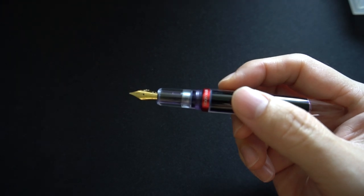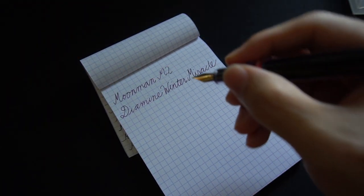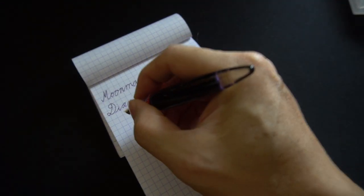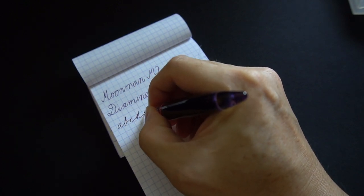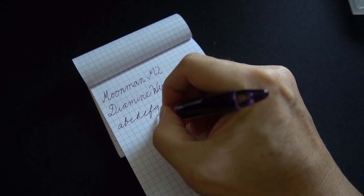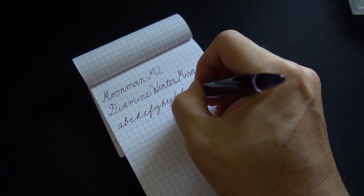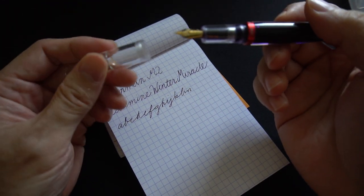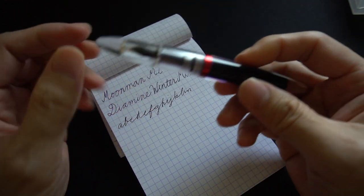I'm just taking it out from the uncapped. So basically I'm just gonna do my usual A B C D E F G. So you can see that it writes pretty well straight out of uncapped and unboxed.